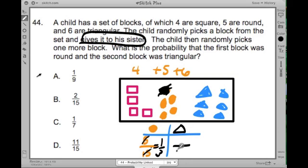And you gotta remember, when they don't put the option back in the box, it changes the whole. So now we have, instead of fifteen, we have fourteen options, of which six could be triangles.